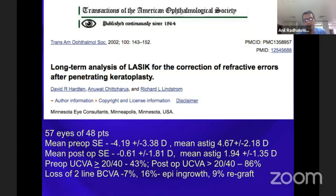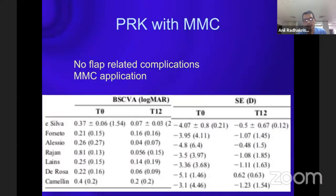PRK is also a useful procedure with the advantage of no flap and no flap-related complications. Results are better for spherical corrections in low to medium powers. For patients with symmetric astigmatism, this can be a good choice as well.